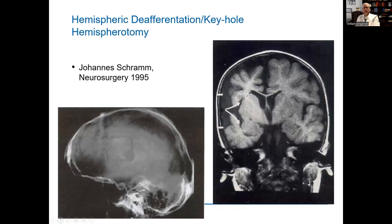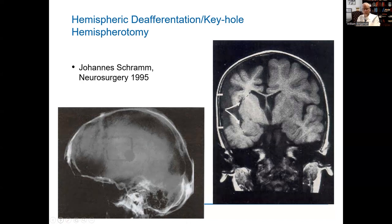A month later in the same journal, Johann Schramm from Bonn presented his technique, very similar to Villamur's, which he termed hemispheric deafferentation. It is remarkable to see the small size of craniotomy through which you can do this operation if you have the patience and technical skills. My concern with such a small exposure is that when you open the area of encephalomalacia in patients who have had large perinatal infarctions, the hemisphere often collapses, and when it does, the draining veins to the sagittal sinus can tear and lead to catastrophic hemorrhage. So my exposures are typically a little bigger.